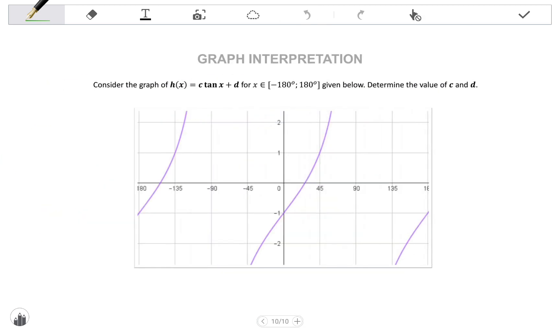A third example, consider the graph of h of x equals c tan x plus d for the given domain and determine the value of c and d. Now c is in the position where we normally have a, which represents the amplitude for a sin or cos graph. Of course, a tan graph doesn't have an amplitude, but the a value comes from the distance between the graph and the midline of the graph at the significant point, 45 degrees. And then the d value represents our vertical shift.